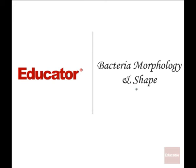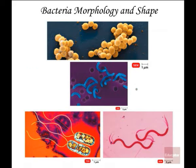Today we're going to have a discussion about bacterial morphology and shape. This characteristic is very important in terms of naming bacteria, defining bacteria, and helping to classify them. Morphology and shape can take on various qualities, including spheres, comma structures, flagella appearances, and spiral worm-like forms.